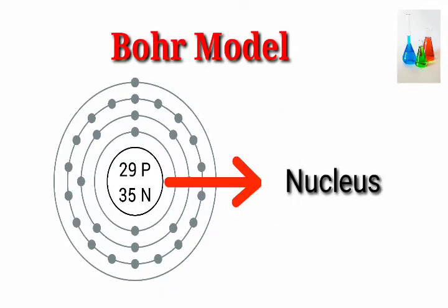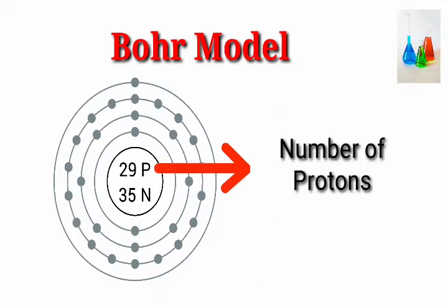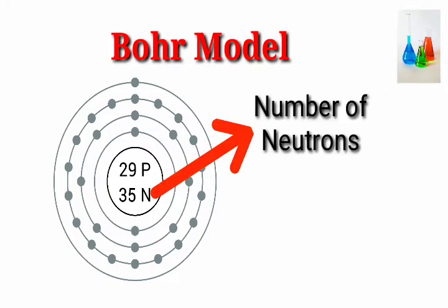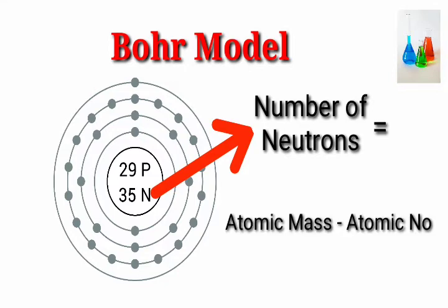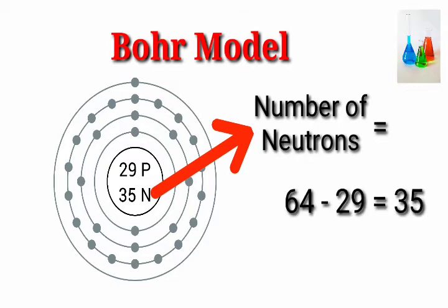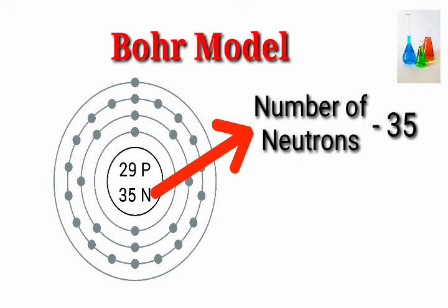Nucleus: number of protons 29. Number of neutrons equal to atomic mass minus atomic number — 64 minus 29 equals 35. Number of neutrons: 35.